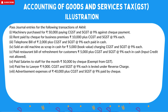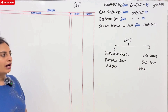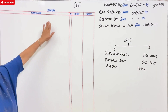Number 3: telephone bill Rs. 2,000 plus CGST and SGST at 9% each, paid in cash. Number 4: sold old machinery in cash Rs. 5,000, charging CGST and SGST at 9% each. Number 5: paid restaurant bill for refreshment for customers Rs. 5,000 plus CGST and SGST at 9% each in cash — input credit not allowed. Now first of all we have to pass the journal entries.